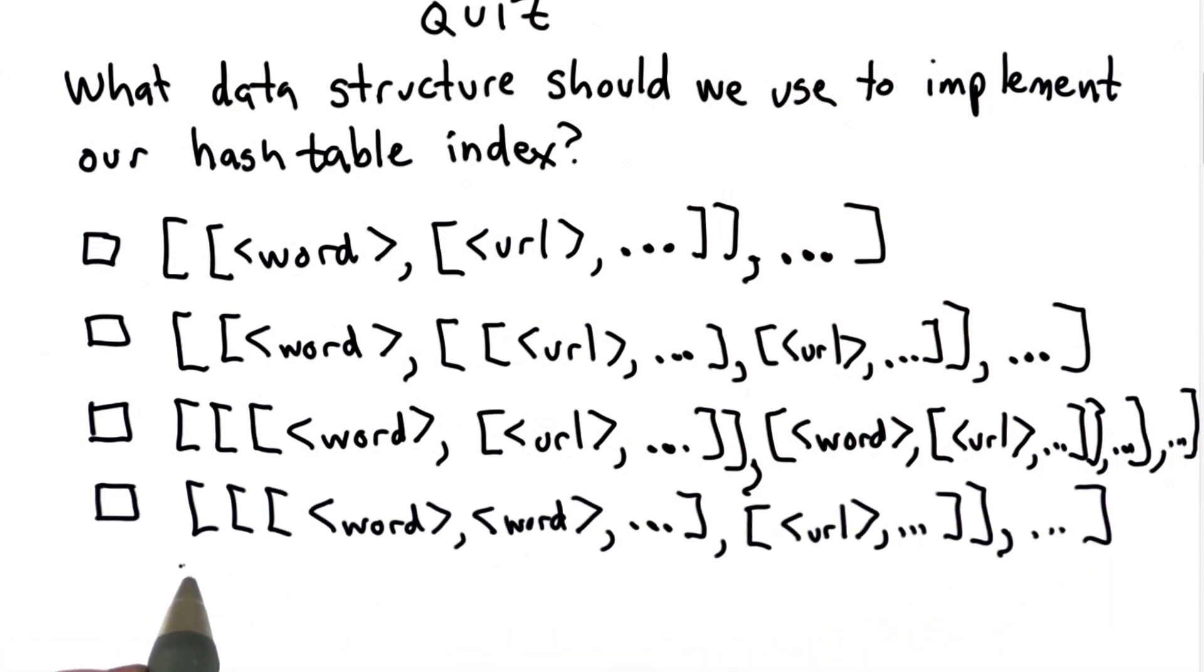For choice 4, we have a list where each element of the list is a list, where within the element list, there's another list, which is a list of words followed by a list of URLs.